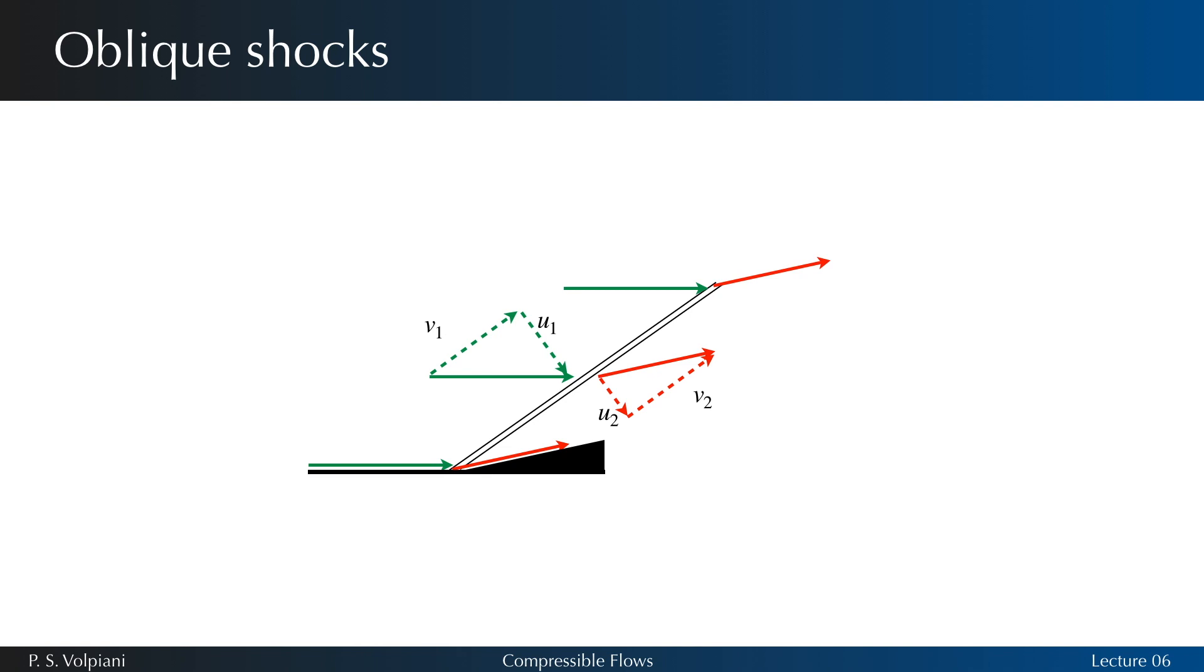Let's consider the 2D problem characterized by the following states before and after the shock. We seek to establish the relation between these two states. The variables beta and theta denote the shock angle and the flow deflection angle, respectively.